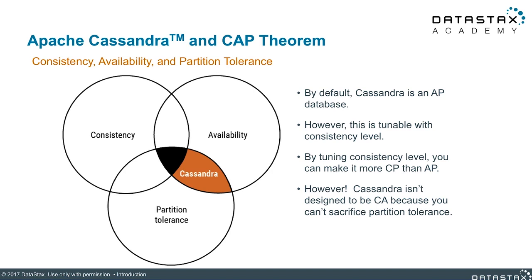Distributed systems typically sacrifice one of these qualities. By default, the choice that Cassandra makes is to sacrifice consistency. That is, Cassandra will accept temporary inconsistencies in data in order to make sure that the database is highly available and can support partitions, which is why it's sometimes referred to as an AP database. However, Cassandra does provide the ability to require more consistency by specifying the number of nodes that must agree on a read or a write, in which case you could choose to sacrifice availability instead of consistency. This flexibility is commonly referred to as tunable consistency.